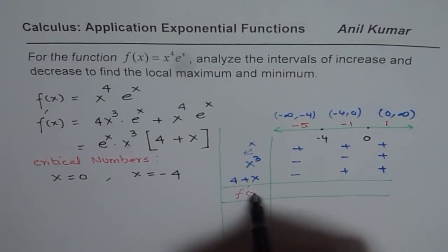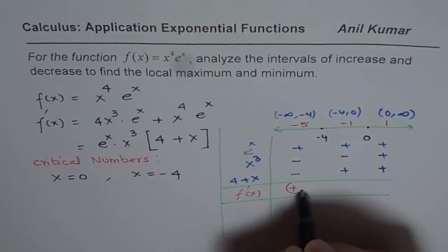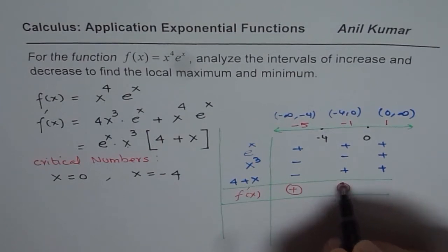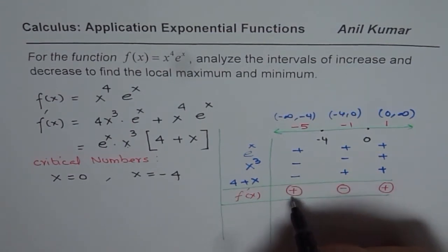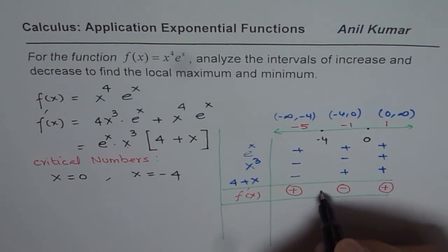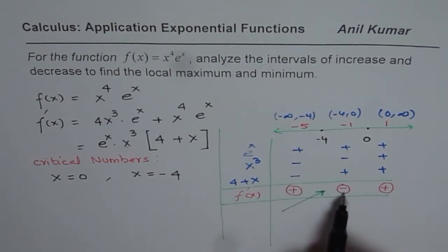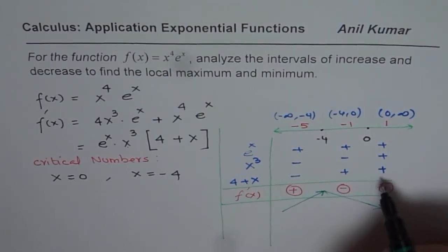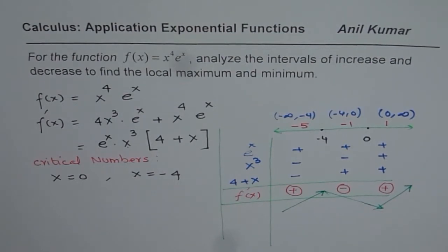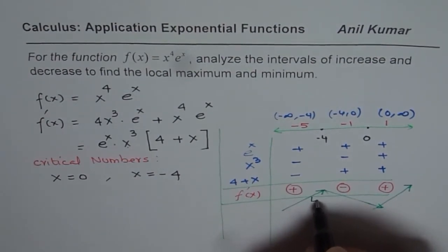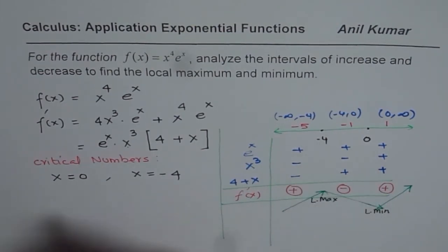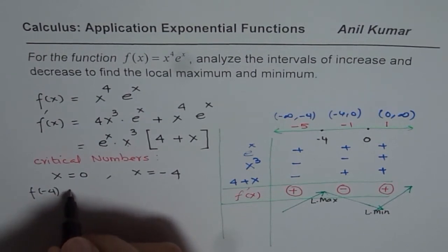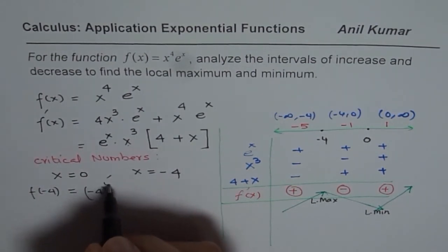Combining the signs: on (−∞, −4) the derivative is positive, so the function is increasing. On (−4, 0) the derivative is negative — two negatives give one negative — so the function is decreasing. On (0, +∞) all factors are positive, so the function is increasing again. From this we can clearly identify a local maximum and a local minimum. We get the maximum value at x = −4, so let's find f(−4).